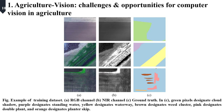Green pixels mean cloud shadow, purple is standing water, yellow is waterway, brown is weed cluster, pink is double plant, orange is planter skip, and blue is background.